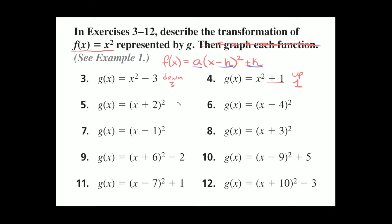Number five: g of x equals x plus 2, in parentheses, squared. These parentheses correspond to the x minus h part of vertex form. This number inside the parentheses tells you how many spaces you move the parabola side to side. Here we have a positive 2, but you take the opposite sign, so we move the parabola negative 2 spaces. Negative 2 means we're moving 2 spaces to the left.